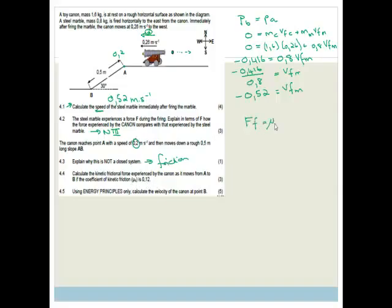So the force of friction equals mu k times Fn, but this is at a slope. So here is our cannon, and this is the normal, but this here is the force of gravity. So in this case, the normal force is equal to the force of gravity perpendicular, and this angle here is 30 degrees. So this would be the adjacent side, and we've got the hypotenuse, which is Fg.